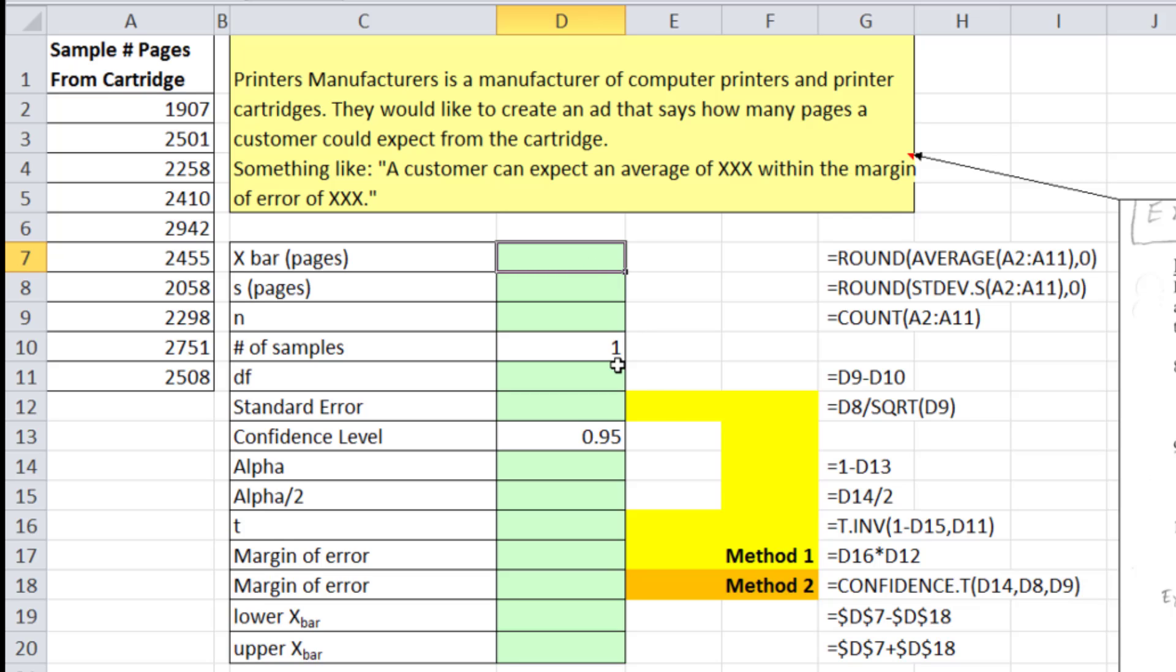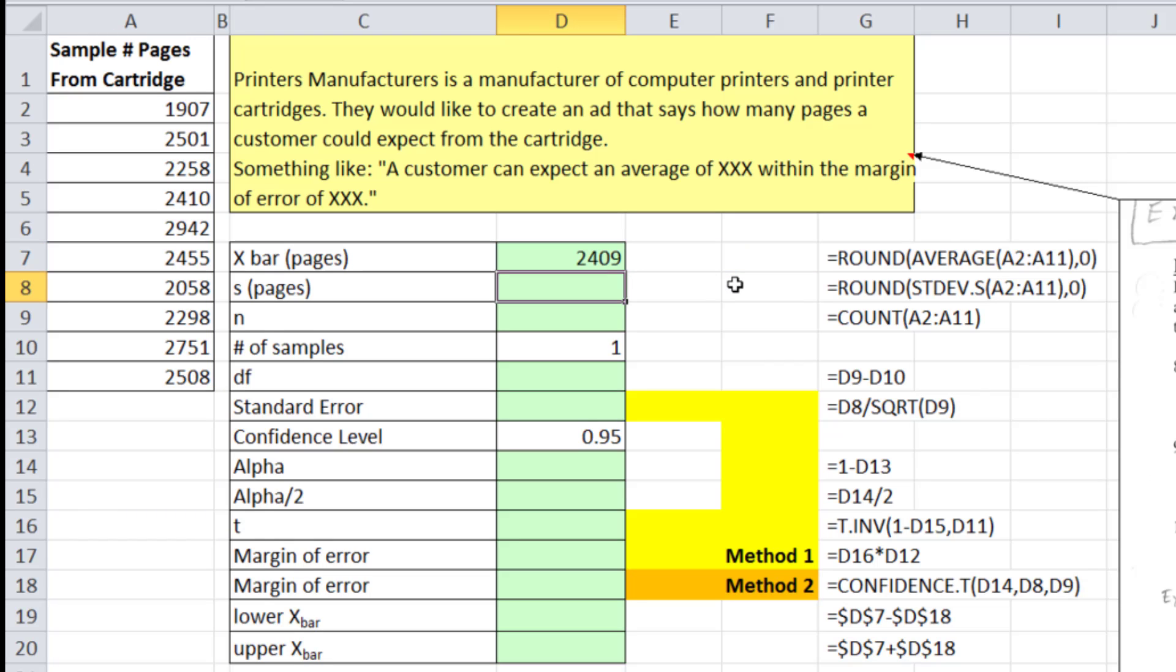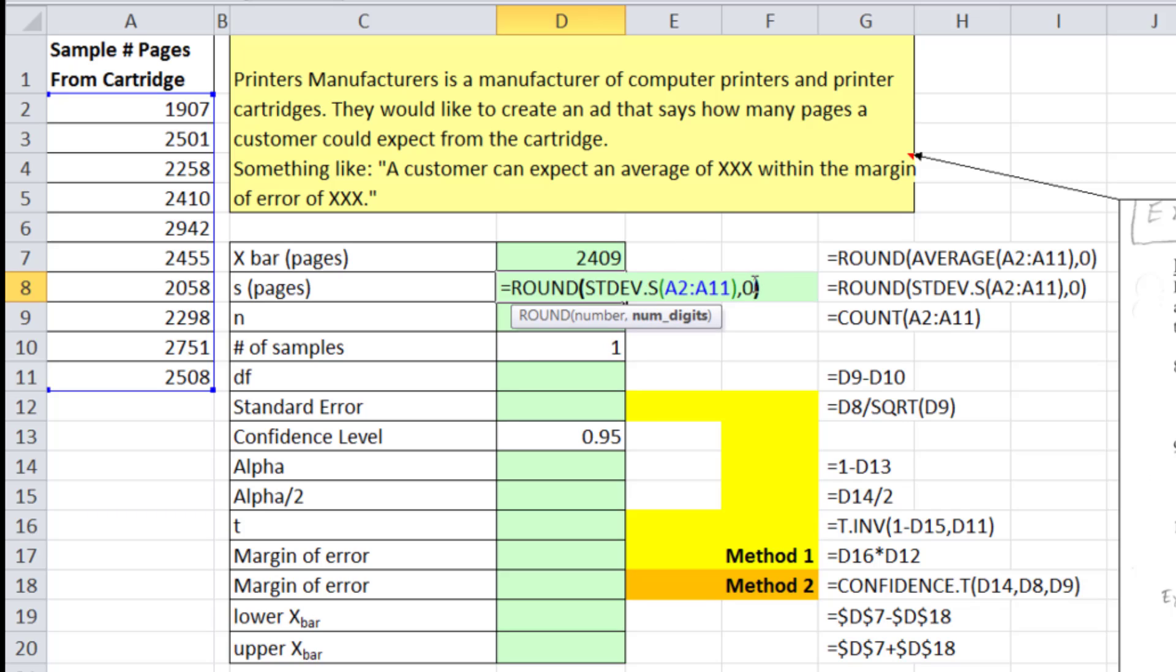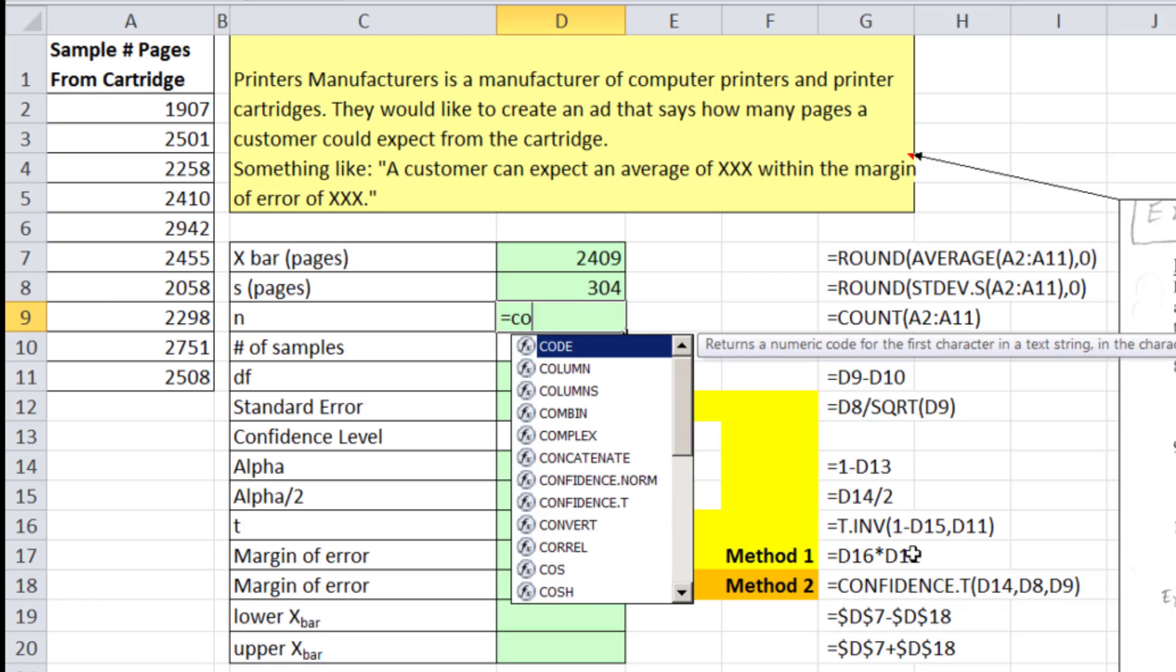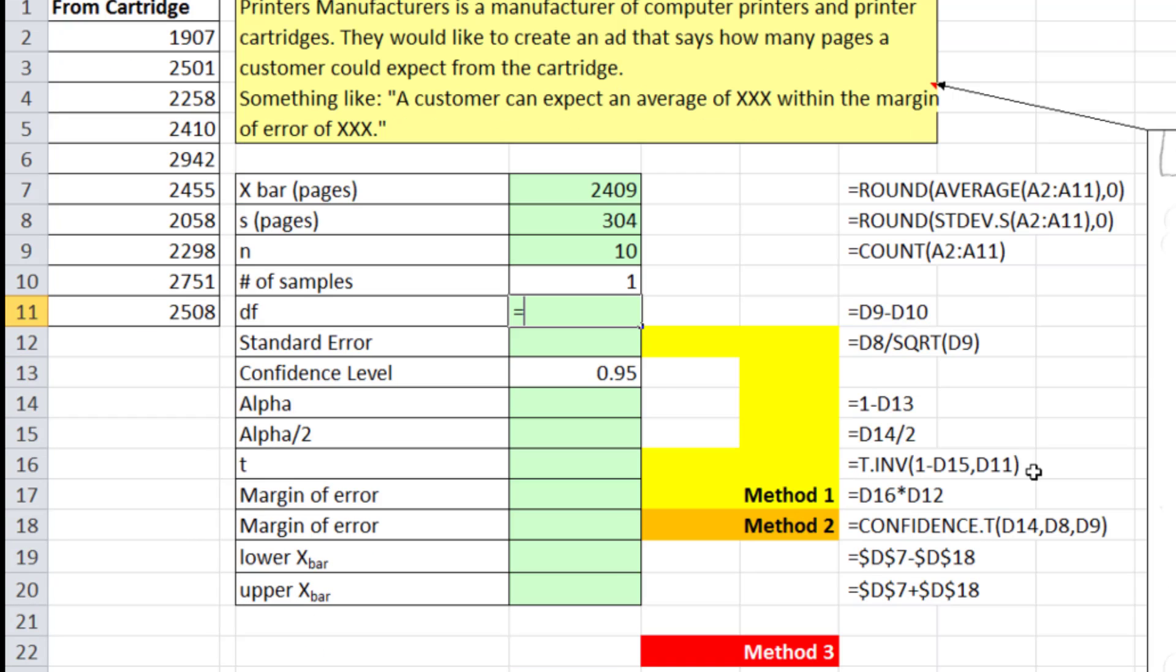All right, let's go ahead and calculate our x-bar. We'll use average to calculate our mean. Now, I want to actually round these because these are pages. You can see over here, I have the round function. The round, you can tell it to round to whichever digit you want. We want to the integer, so you put 0, 2,409. All right, standard deviation, stdev.s. So we're calculating. We don't have sigma, so we're calculating s. And I'm going to also round this. 0 means to the integer. So 304. n, we need our n, count. We have numbers, so we're going to use count function. The sample is 1, so we'll calculate our degrees of freedom.